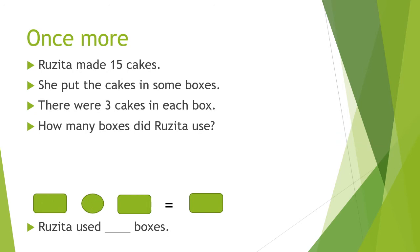Now can you try one more time? Rosita made 15 cakes. She put the cakes in some boxes. There were 3 cakes in each box. How many boxes did Rosita use? Can you try? You choose the smaller number. We have 15 and 3. The smaller number is 3. So we draw 3 boxes: 1, 2, 3.